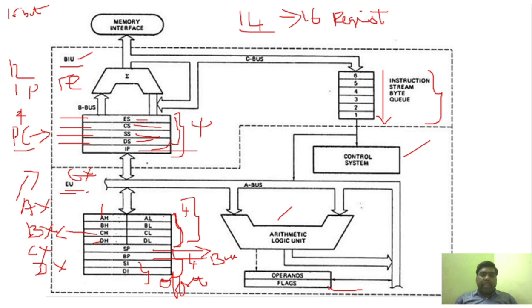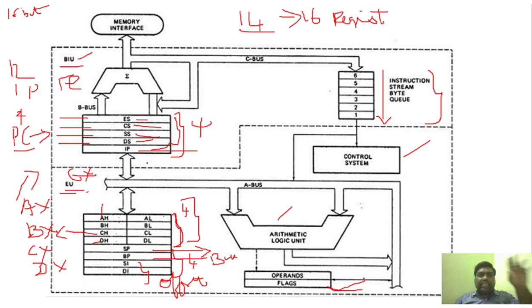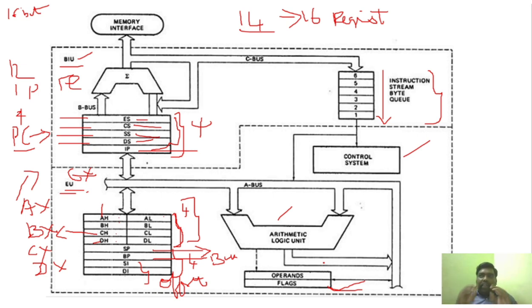I still didn't explain the flag register. We know that the flag register is used to track the results — the processor tracks results based upon the different flags. In the last video, we saw what is the zero flag, the sign flag, the overflow flag, and so on. Even in 8086, we have many flags. Flags are used to track results; based upon the results, these flags can be set to 1 or set to 0.